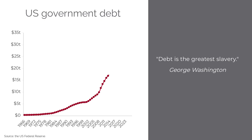George Washington said debt is the greater slavery. If we look at the chart on the left, we can see how U.S. government debt has evolved over the years. It started in the 60s pretty negligible, had a bounce in the 80s, and then started growing exponentially in the early 2000s. The first national debt post-American Revolution was issued in 1790 — ironically by then-President George Washington — with a face value of 11.7 million dollars.